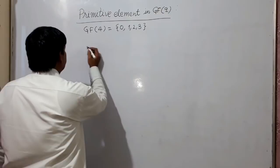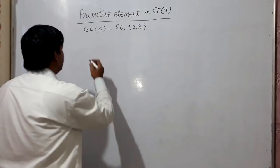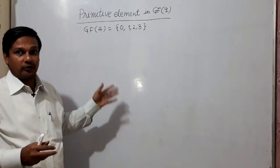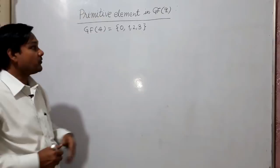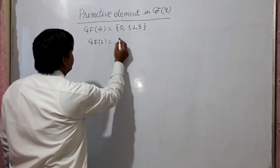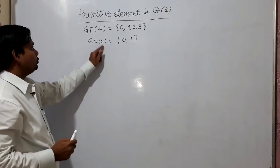We will have to take a primitive polynomial so that, using that primitive polynomial as a generator polynomial, we will extend GF2 to GF4. In GF2, we know there will be two values: 0 and 1.